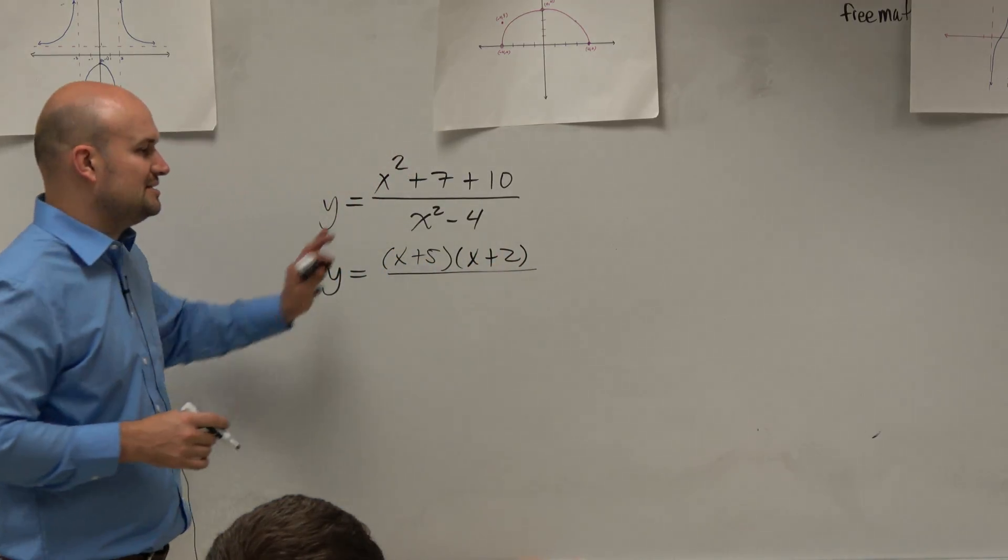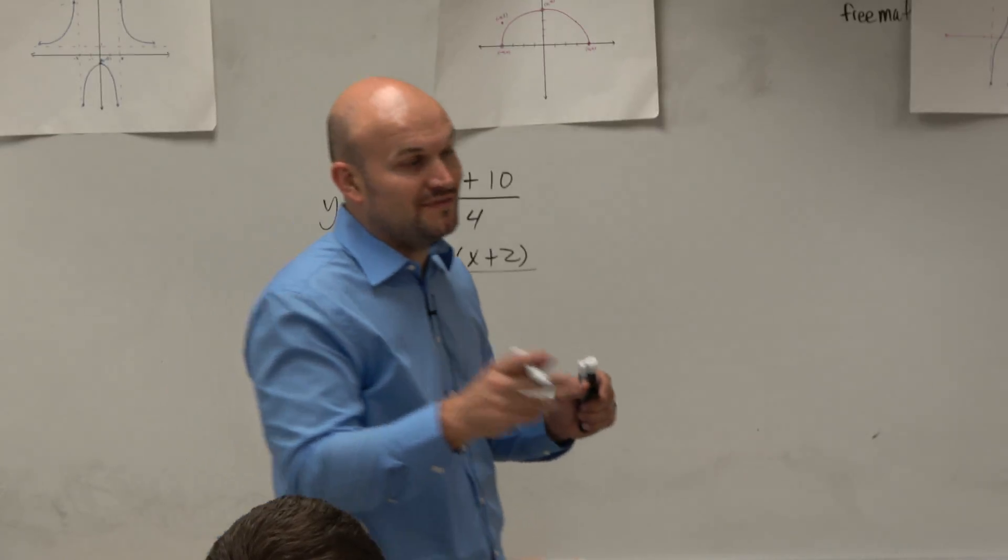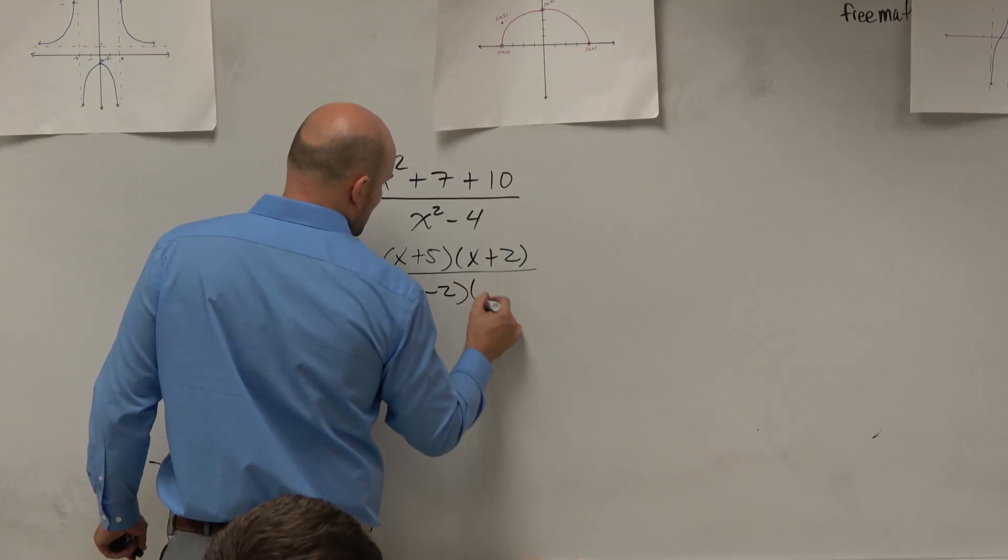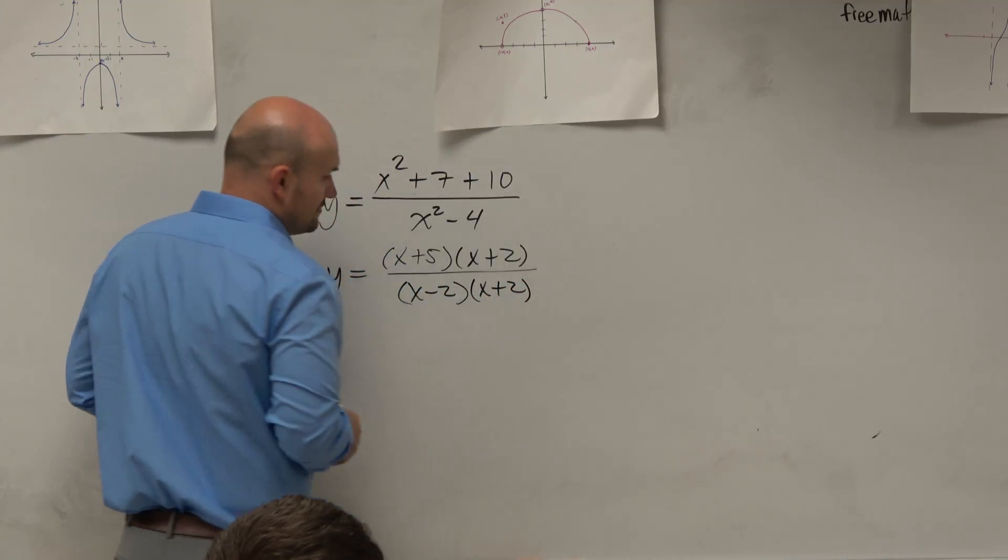And then hopefully, you guys immediately saw x squared minus 4 and said, ooh, difference of two squares. I remember those. I love difference of two squares. So x minus 2 times x plus 2. OK.